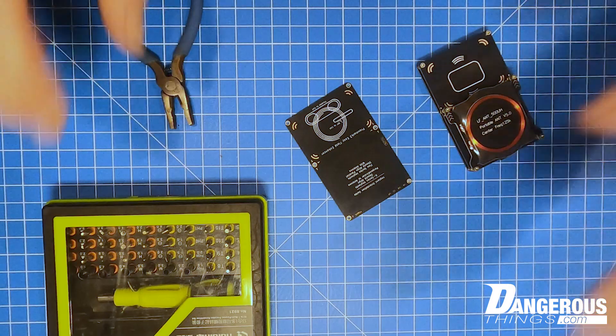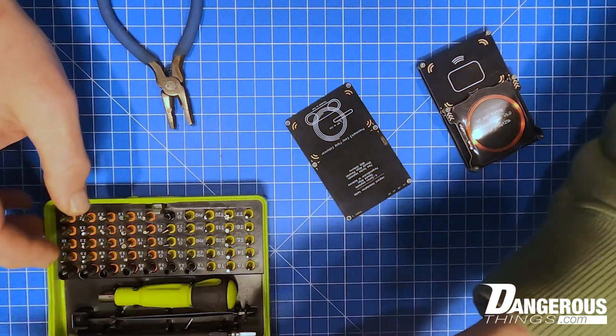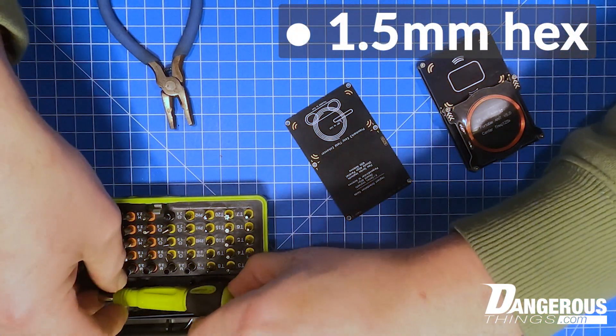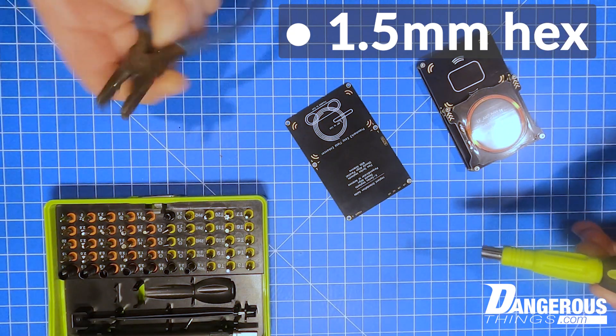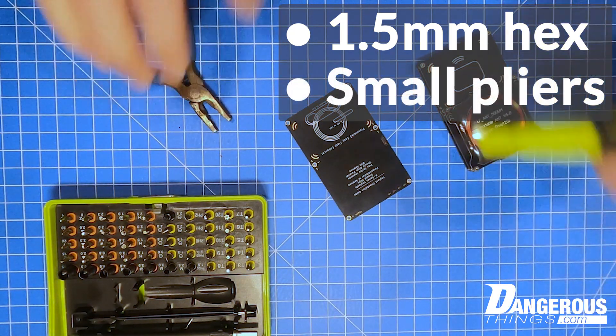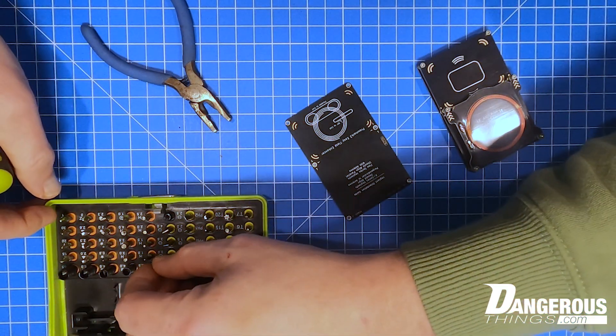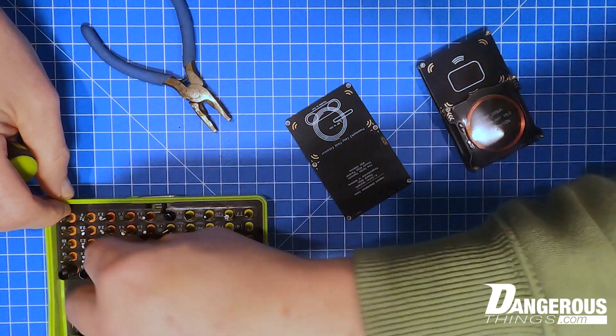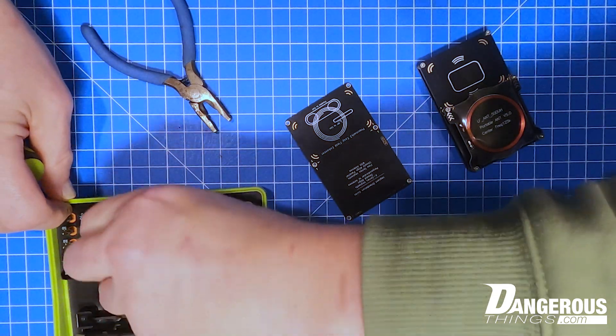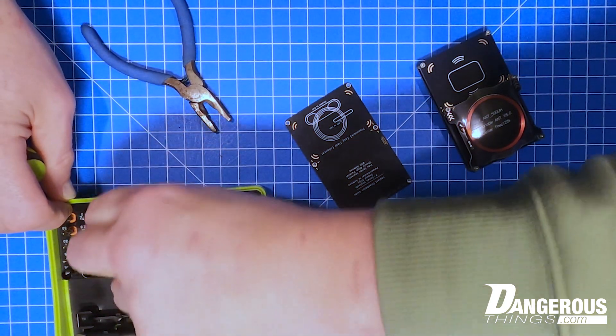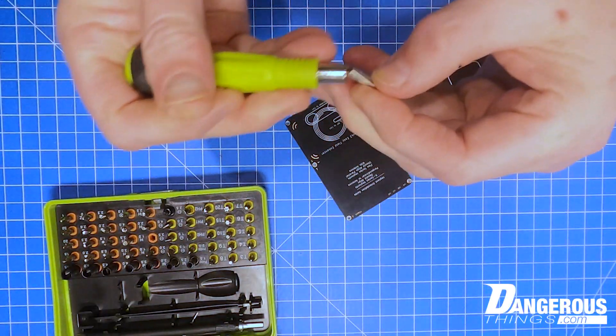What you're going to need is at least a hex driver, a 1.5 size bit, and I like to also use a little pair of pliers just because some of the standoffs, the risers, are a little bit tough to get out of there. Here's my 1.5 bit. Let's stick it in here.